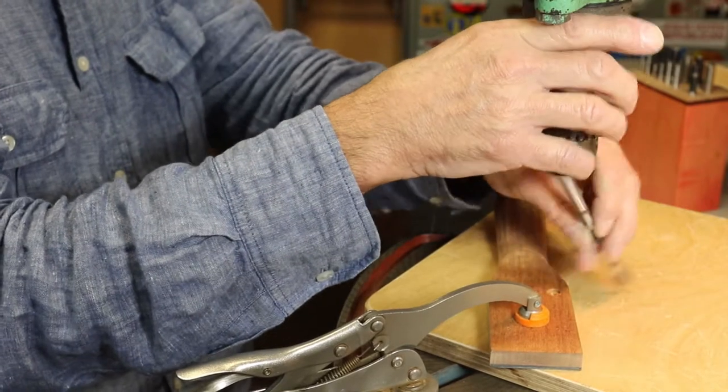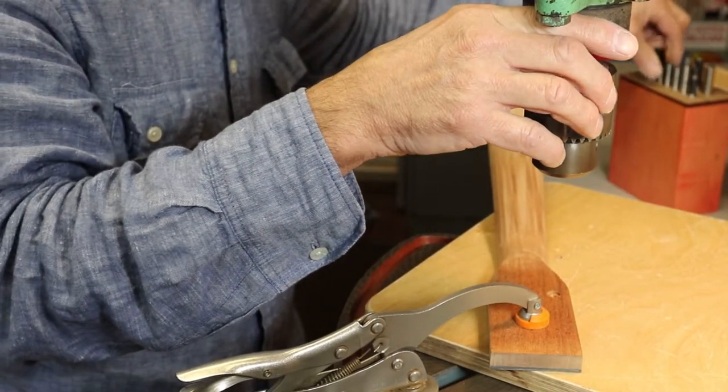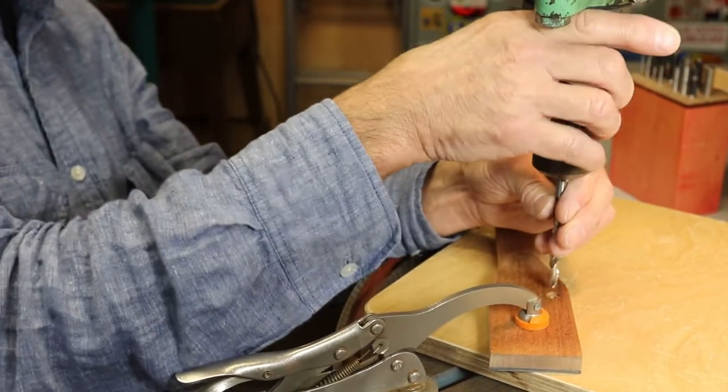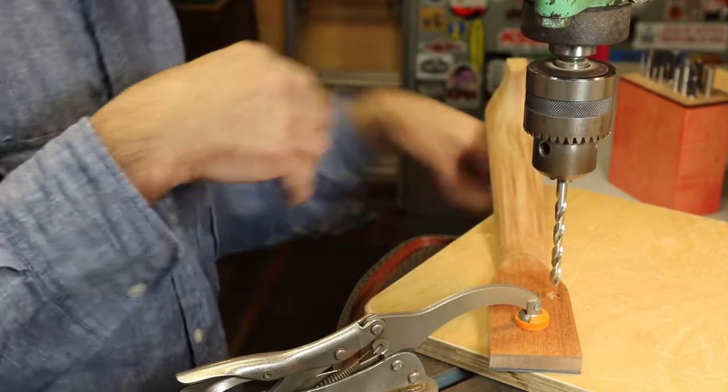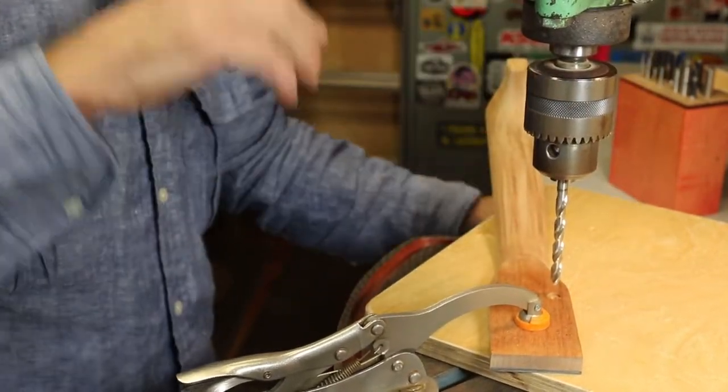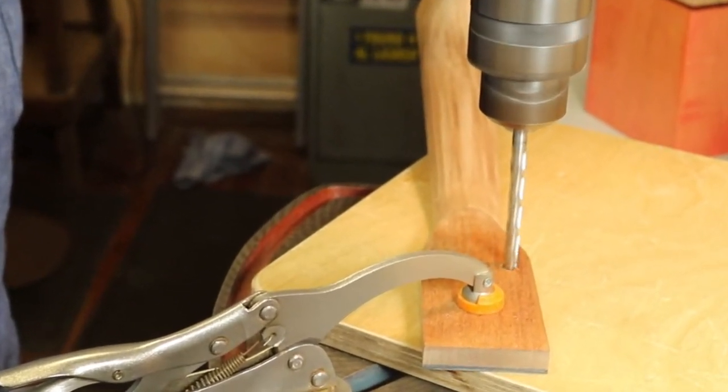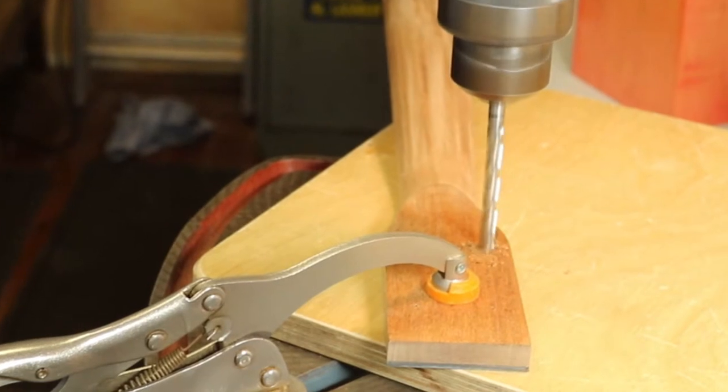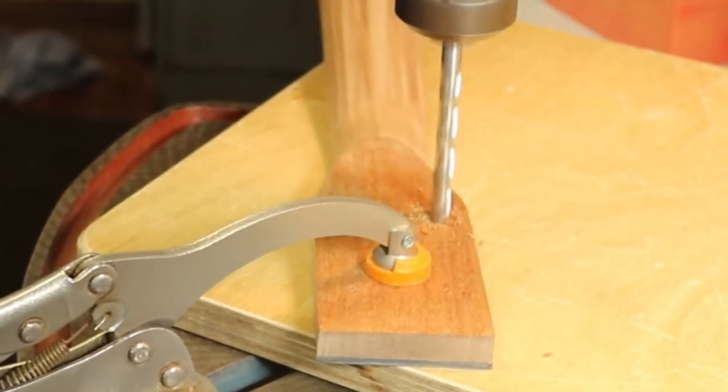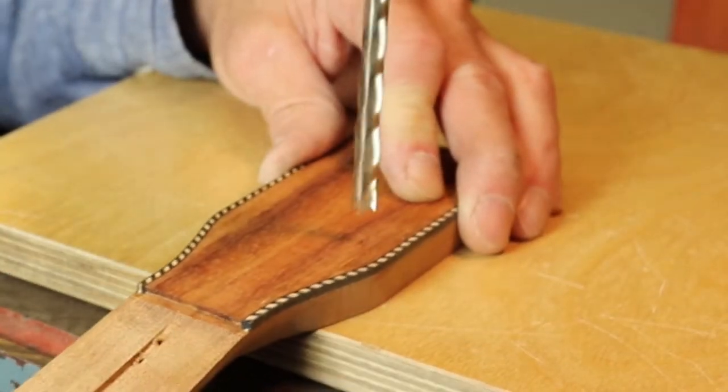Now, without unclamping the neck, I'll switch from the 9mm bit and go down to a 7mm drill bit. I'm using brad point twist drill bits. With the 7mm bit, I'll be drilling halfway through the peghead from the backside. If I drill all the way through in one step, I'll risk tearing out the wood on the face of the peghead. So once I'm halfway through, I'll flip it over and complete drilling the 7mm hole.